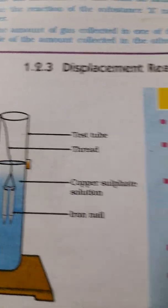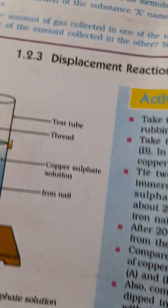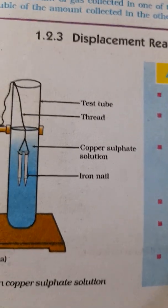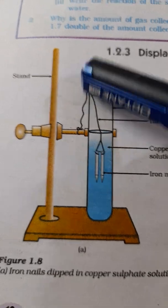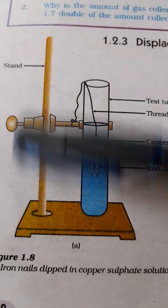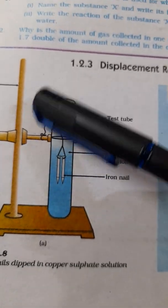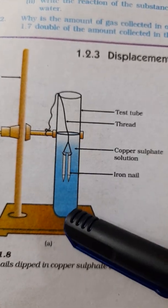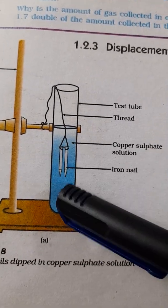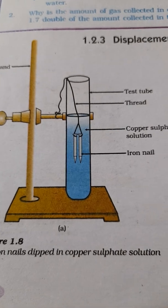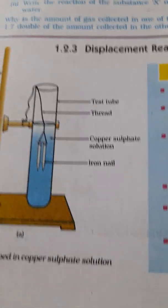Here this is NCERT class 10 chapter 1. First this diagram you can watch. We have got a stand here and this is a test tube, and in a thread we are keeping some iron nails inside a copper sulphate solution. Iron nails dipped in copper sulphate solution. We will watch what is going to happen.